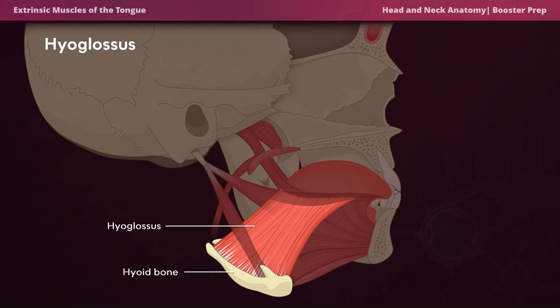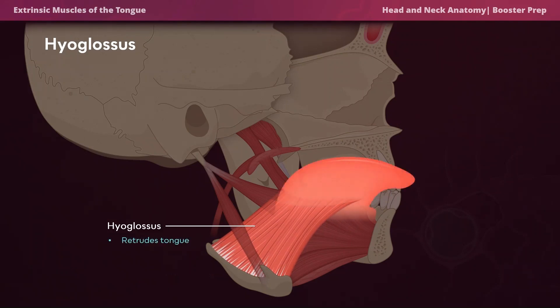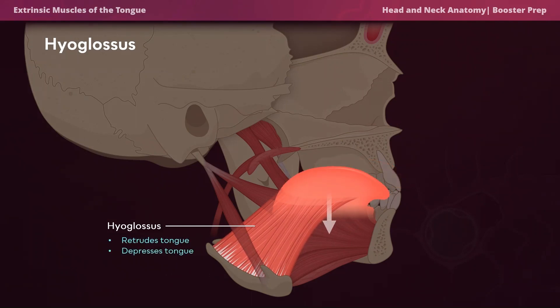Next we have the hyoglossus. The word 'hyo' refers to the hyoid bone, which is where the muscle attaches. As you can see in the image, the hyoid bone is posterior and inferior to the tongue, so it makes sense that the hyoglossus retrudes and depresses the tongue.